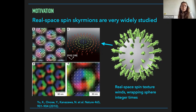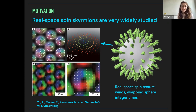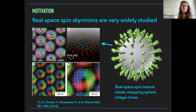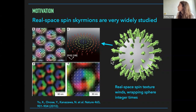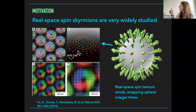In real space, you can have textures of local moments that are topological in a certain sense. People have been very interested in these skyrmions — for instance, as a platform for very dense data storage — but there are many other interesting physics associated with them. At the simplest level, a skyrmion is basically this sort of texture. You can think of it as topological in the following sense: you can think of mapping these moments based on their orientation to the surface of a sphere. Starting at the boundary of the skyrmion, the spin is pointing up, then as we move inward it tips into the xy plane and winds by 2π, and finally at the center it's pointing down.